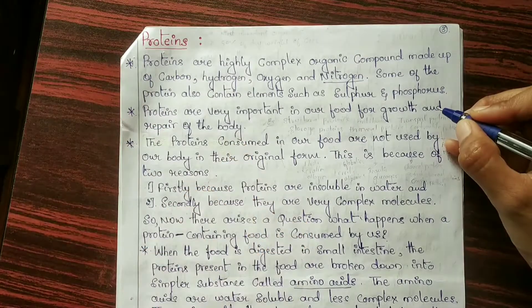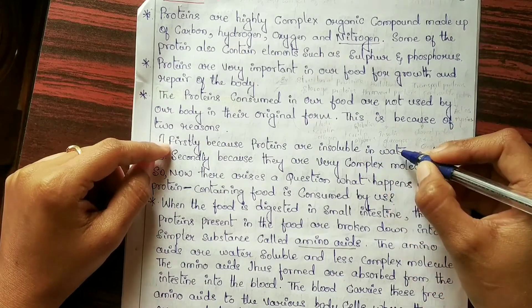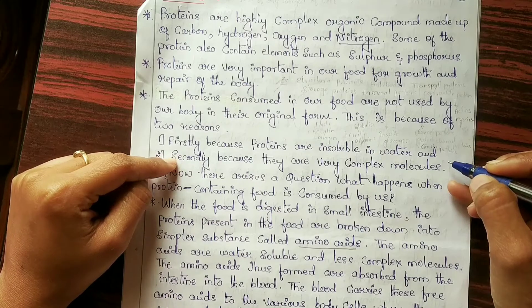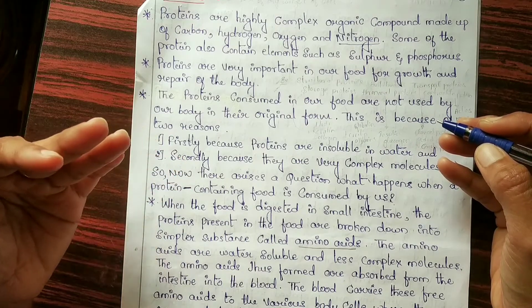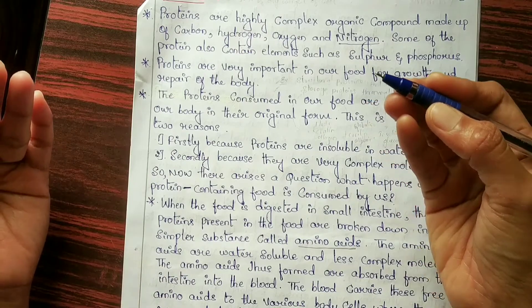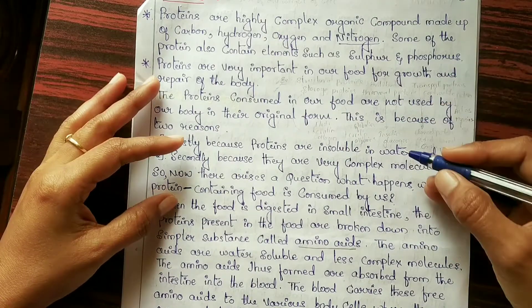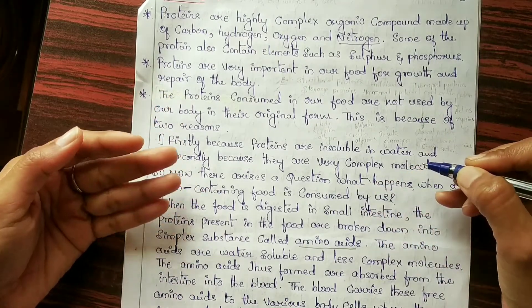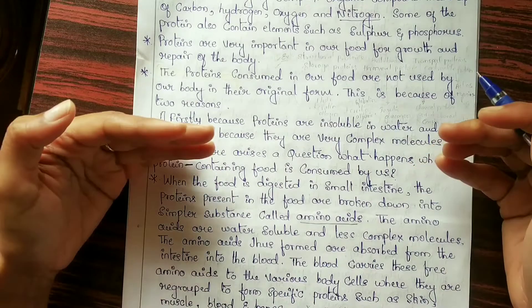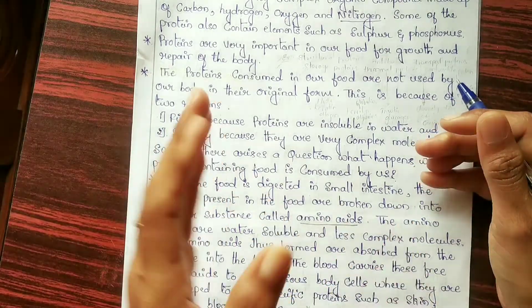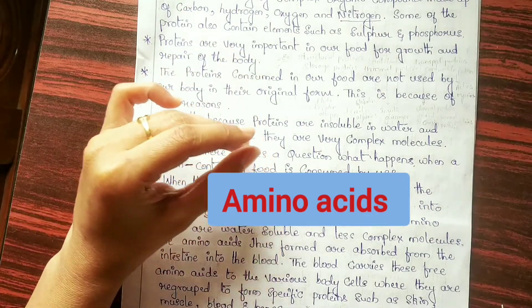Proteins are very important for growth and repair of the body. The proteins we consume in food are not used by our body in their original form — firstly because proteins are insoluble in water, and secondly because they are very complex molecules. When protein-containing food is digested in the small intestine, the proteins are broken down into simple substances called amino acids, which are water soluble and less complex. These amino acids are absorbed from the intestine into the blood.